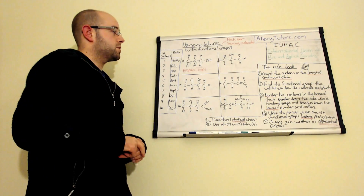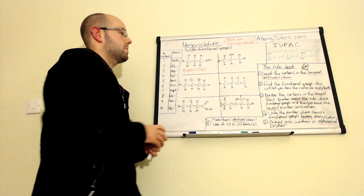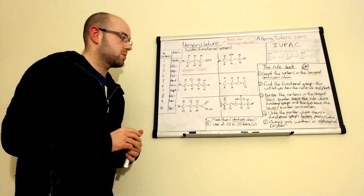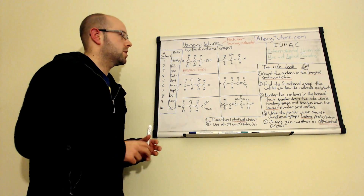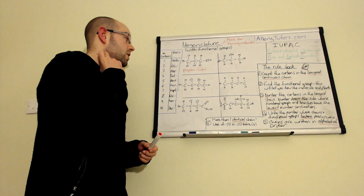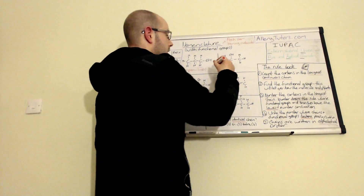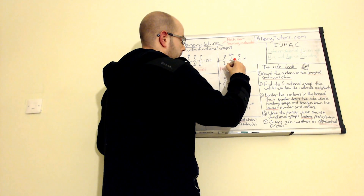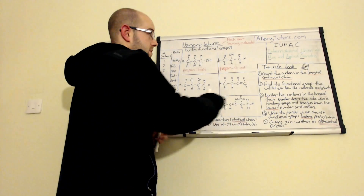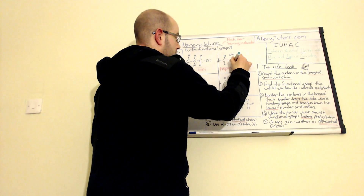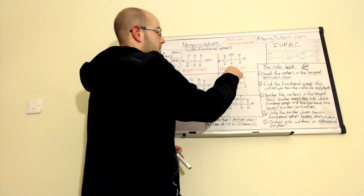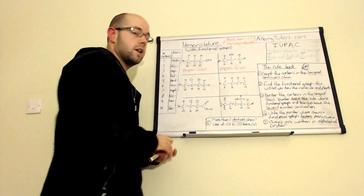This next molecule is an isomer of the other two - a positional isomer, because we've changed the position of our functional group. There is a video on different types of isomers if you click the link below. This one, instead of being propan-1-ol, is actually propan-2-ol. The numbering doesn't really matter in this case because either way the middle carbon is always going to be the second carbon, so our alcohol group sits on the second carbon.